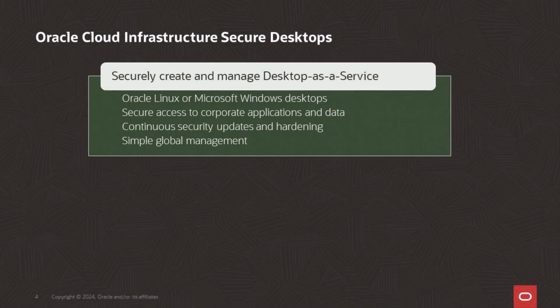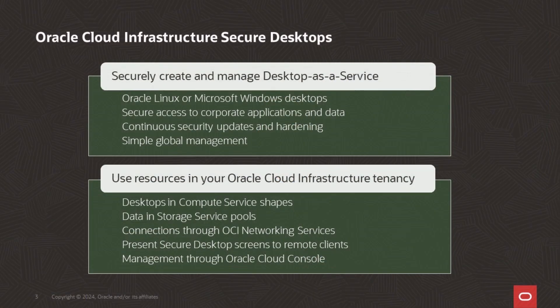Oracle Cloud Infrastructure Secure Desktops enables you to securely and quickly spin up or down virtual desktops as Desktop-as-a-Service. You can rapidly provide Oracle Linux or Microsoft Windows desktops to global workers, and enable user access to corporate systems and to secure data. As a cloud-native service in OCI, it benefits from continuous updates in security and network hardening. A key attribute of the service is that it gives you the power to manage virtual desktop pools globally with simple commands. As an administrator, you create and manage desktops within your Oracle Cloud Infrastructure tenancy. The desktops run efficiently in compute service shapes, while data is kept in storage service resources. User and service connections are secured through OCI networking services, and the Secure Desktops service presents desktop screens to users in their client systems. This is all managed through Oracle Cloud Infrastructure.